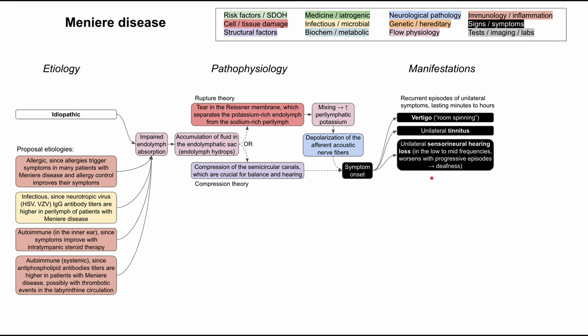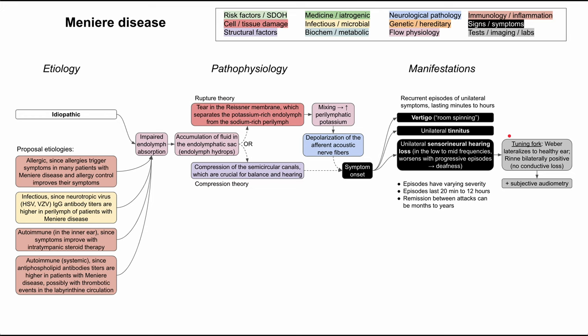So the three main symptoms are vertigo, unilateral tinnitus, and unilateral sensorineural hearing loss. In the clinic it will largely be a clinical diagnosis, but you can verify the hearing loss is sensorineural using a tuning fork. The Weber test will lateralize to the healthy ear, and the Rinne test will be bilaterally positive, indicating no conductive hearing loss. You can confirm sensorineural hearing loss later with subjective audiometry, which will show hearing loss in the low to mid frequencies.